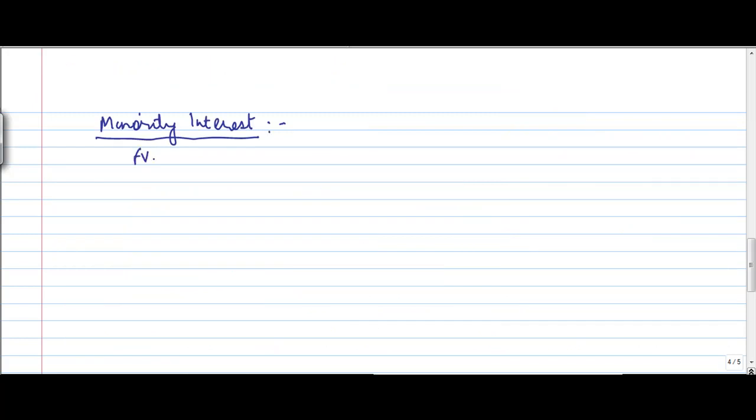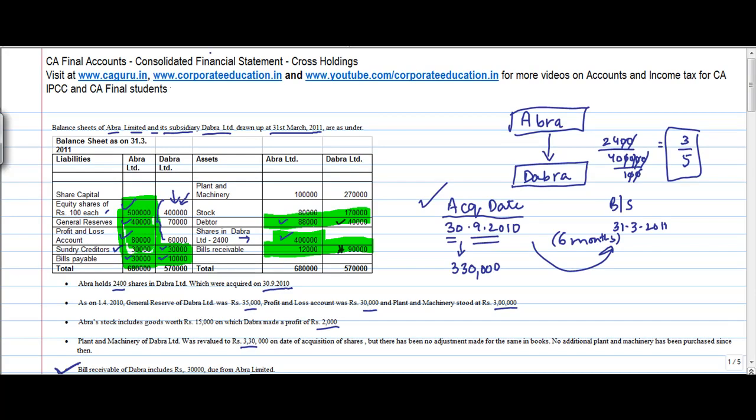Now what happens to the balance 1,60,000? 4 lakh minus 2,40,000. That is the shares which is owned by the minority. So in minority, I write down face value of shares. 1,60,000 is the value. So what I have done is, I have plotted this 4,00,000 now. So I just remove this also like this.